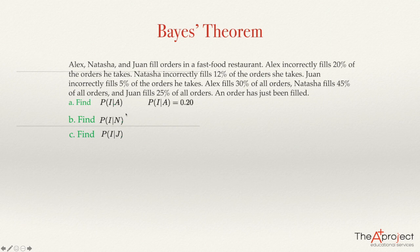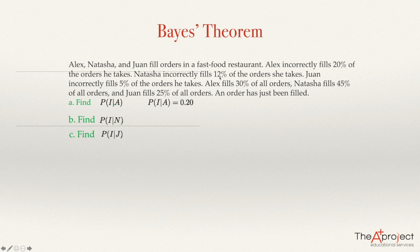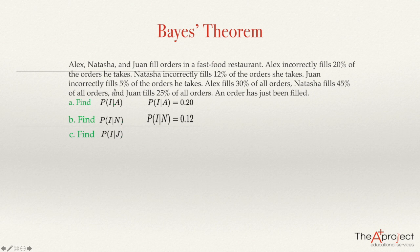So the answer of this question is actually given in the problem. What is the probability that the order is filled incorrectly given that it was filled by Natasha? Natasha incorrectly fills 12% of the orders she takes, so the probability of I given N is equal to 0.12. And finally, find the probability that the order is filled incorrectly given that it was filled by Juan. Juan incorrectly fills 5% of the orders he takes, so the probability of I given J is equal to 0.05.